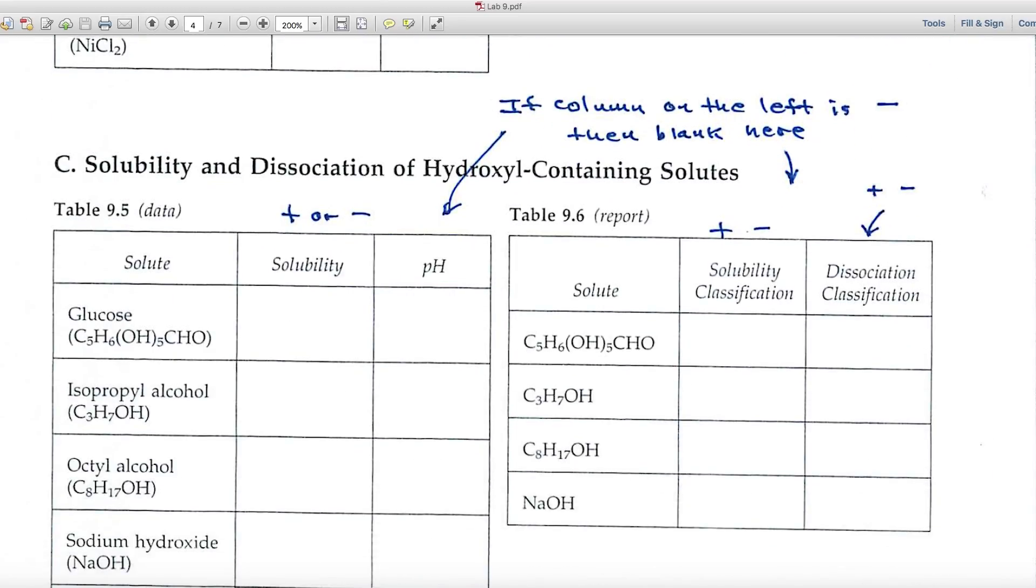And each of the parts of the experiment are pretty much like that. Part C deals with the solubility and dissociation of OH containing solutes. OH, you know, is a base, and so we're using pH to decide whether OH is present or not. First column, use a plus or minus to indicate whether it dissolves or not. In the second column, for those substances that have dissolved, indicate their pH. So, if you have a negative here, you won't have any pH data on the right-hand side.